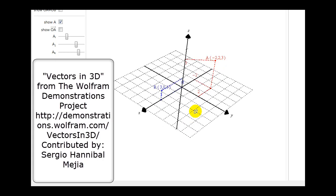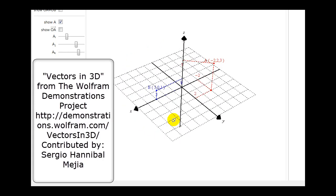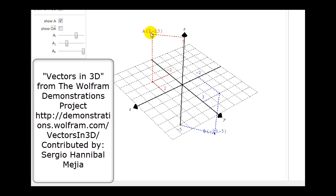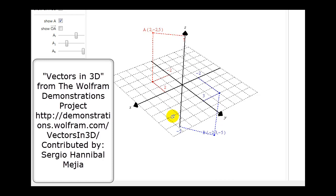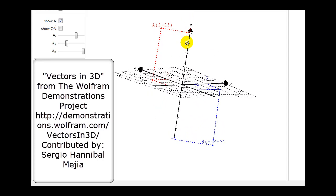Rotating the view gives a better perspective of where those points are in space. Now the red point has coordinates (2, -2, 5) — it's out two units along the x-axis, left two units along the y-axis, and then up five units along the z-axis. The blue point is (-2, 3, -5) — two units back on the x-axis, three units right along the y-axis, and down five units along the z-axis. Rotating shows the blue point below the x-y plane and the red point above it.